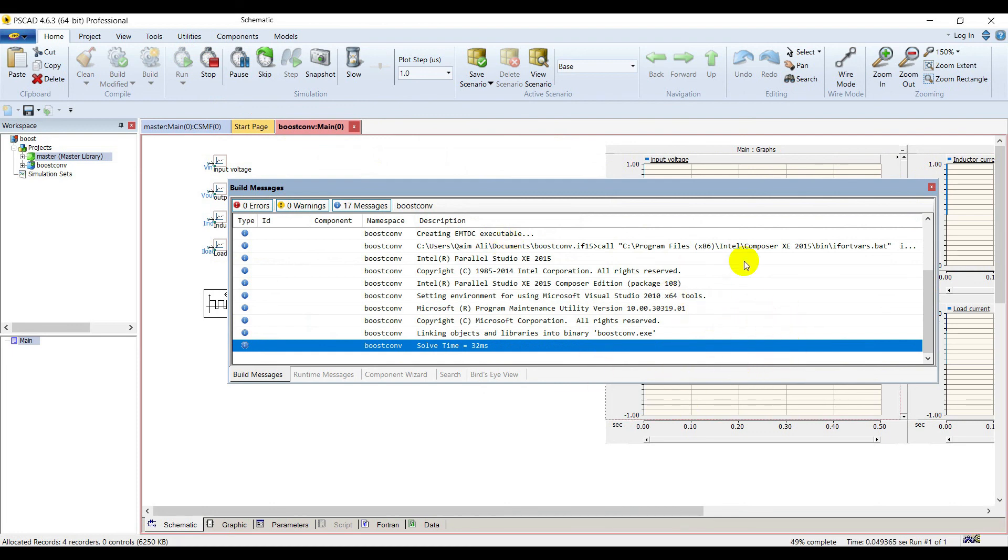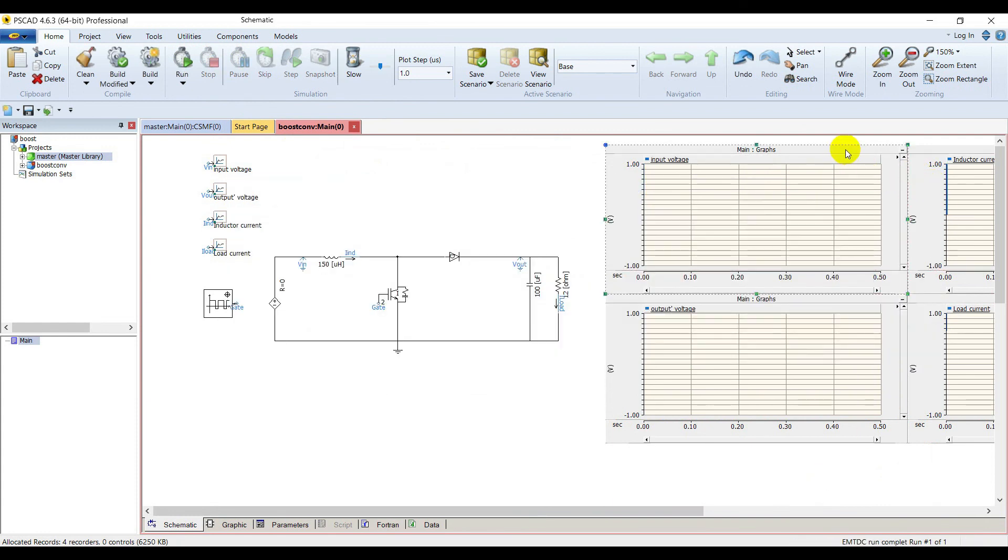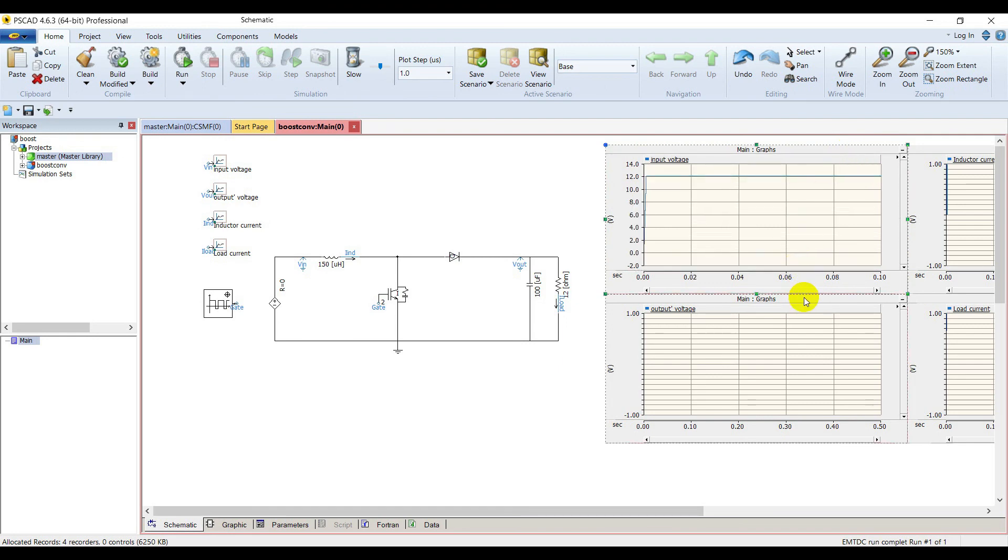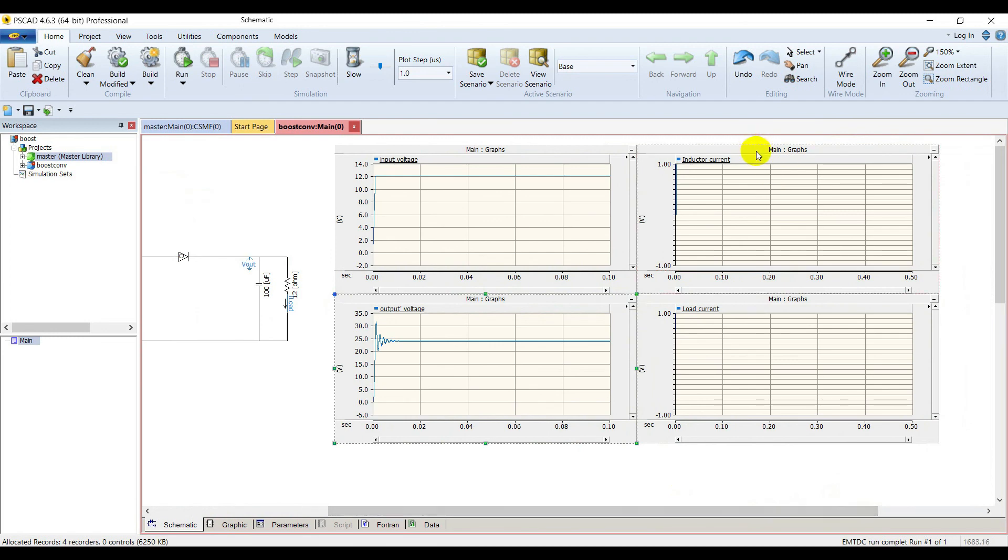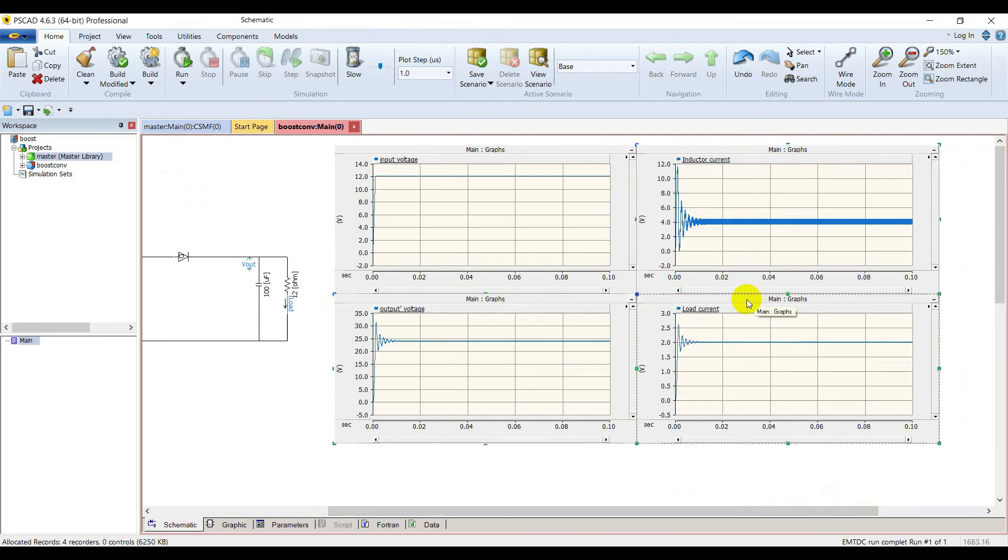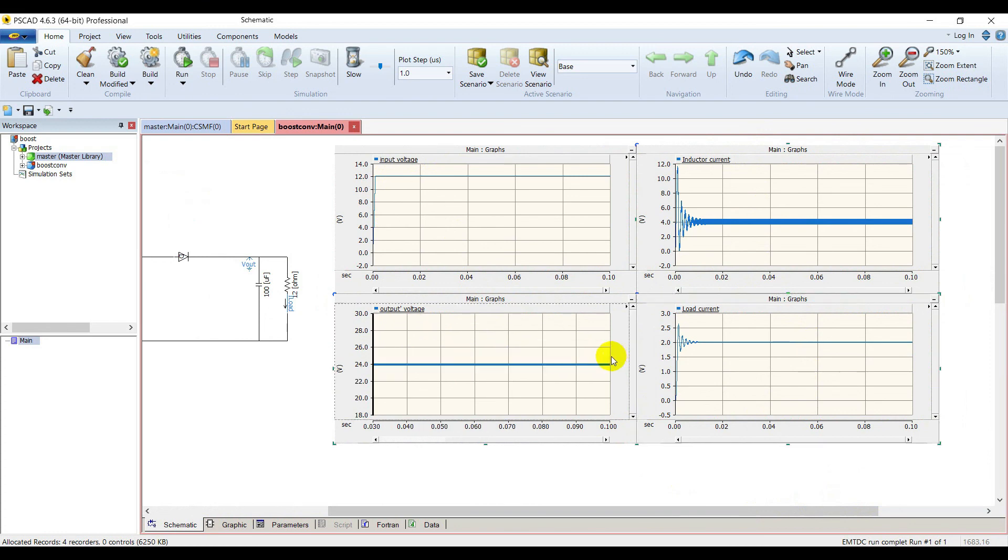Now run it. It's running. It's complete. Click on a graph and press R to view the signal. You see that the input voltage is 12 volts, the output voltage is 24 volts. The output current is 2 ampere.